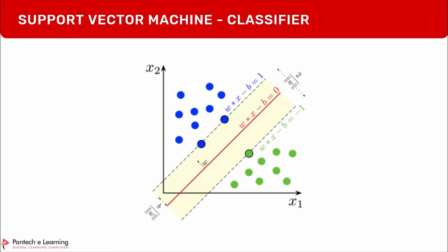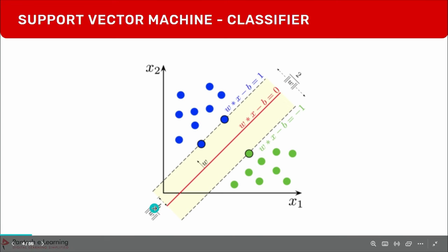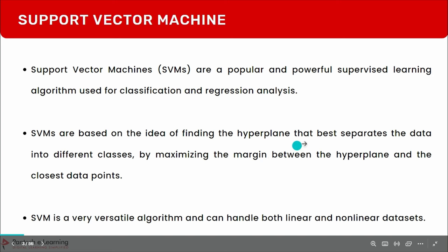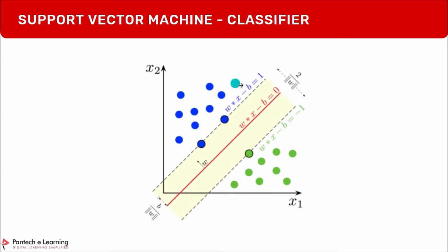Imagine we have two classes — blue and green, or class one and zero. We can see a center red line classifying or cutting the plane to differentiate between the two. There are also two dotted lines on either side. The center line is called the hyperplane — it best separates the data into different classes. The outer dotted lines are called support vectors — that's how the algorithm gets its name.